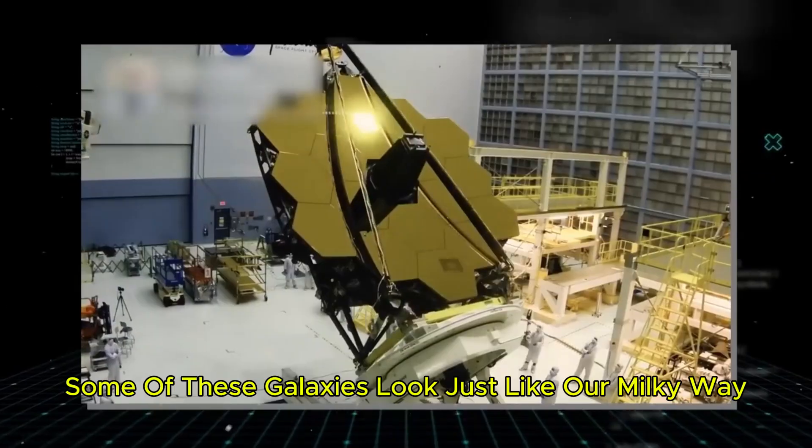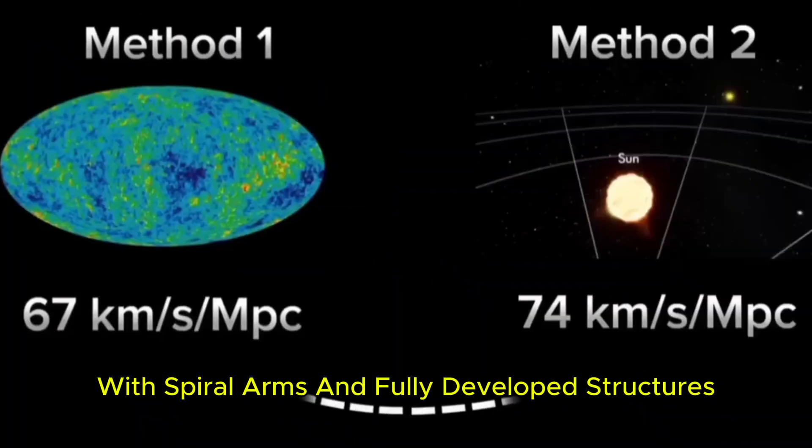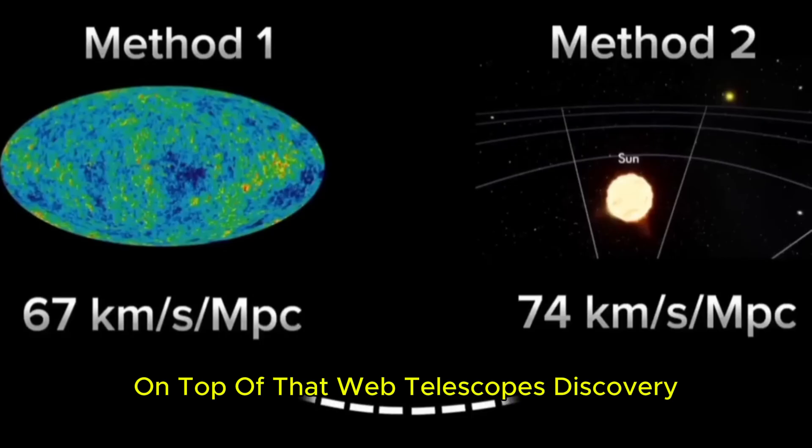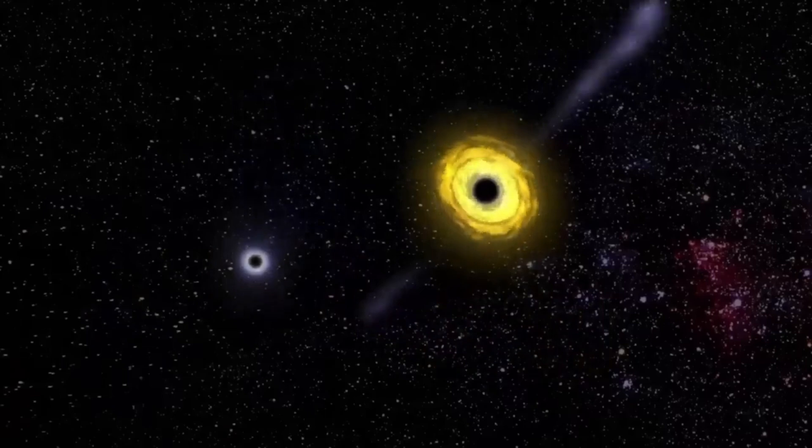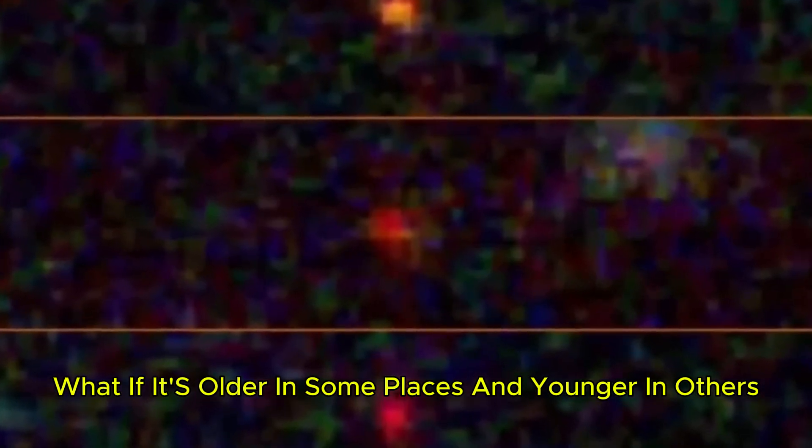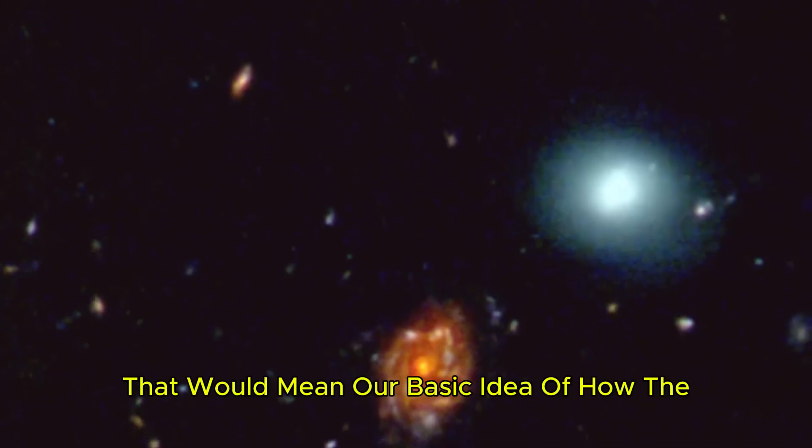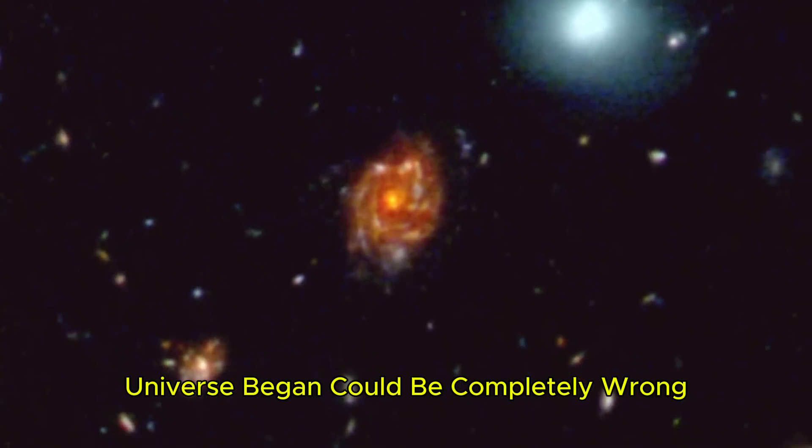Even more surprising, some of these galaxies look just like our Milky Way with spiral arms and fully developed structures. On top of that, Webb Telescope's discovery, which suggests that the expansion of the universe is non-uniform, raises a scary possibility. What if the universe doesn't even have a single age? What if it's older in some places and younger in others? That would mean our basic idea of how the universe began could be completely wrong.